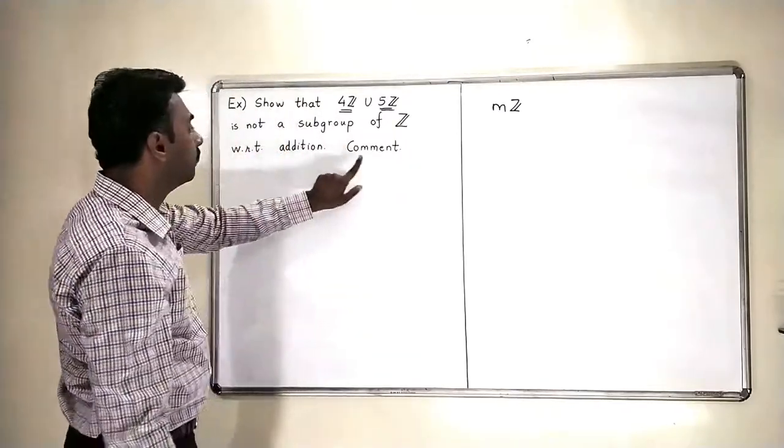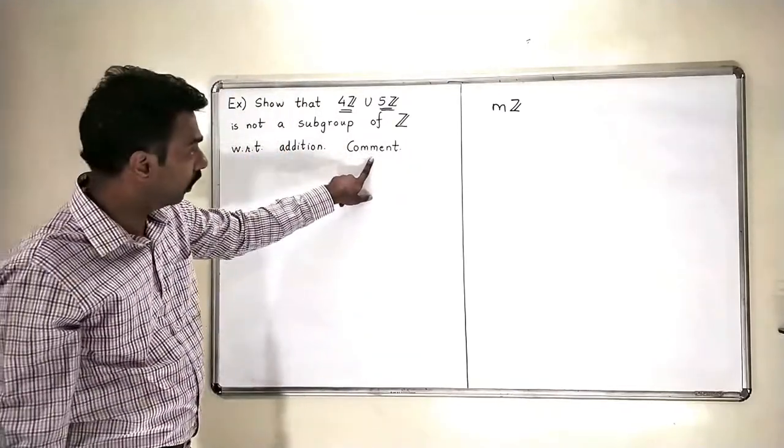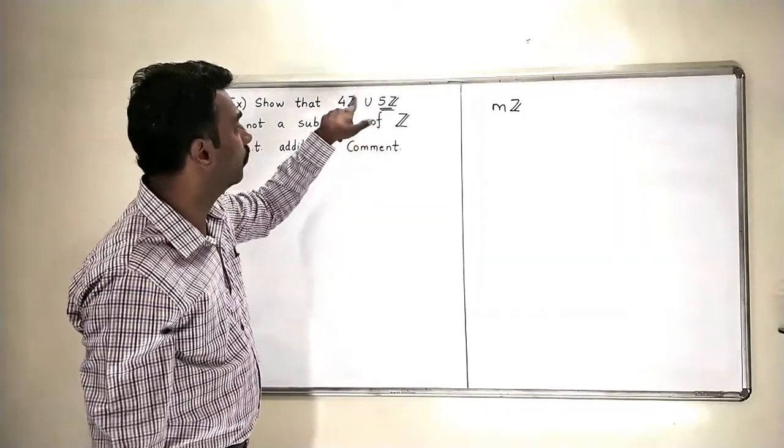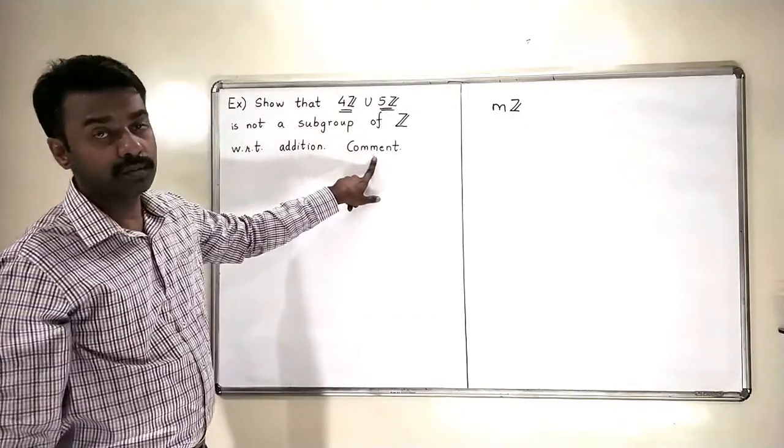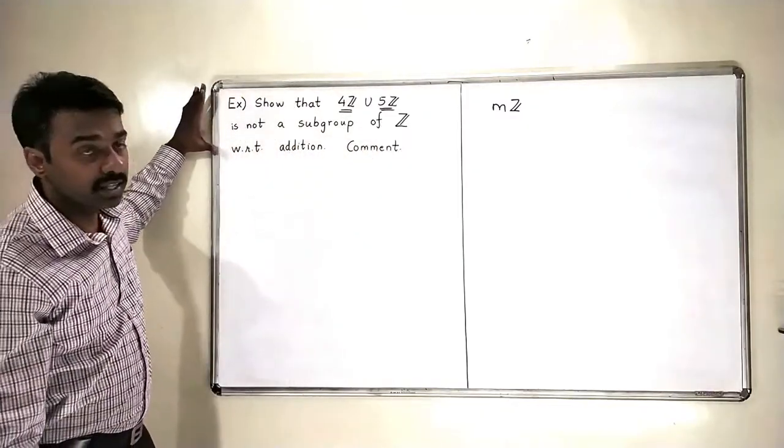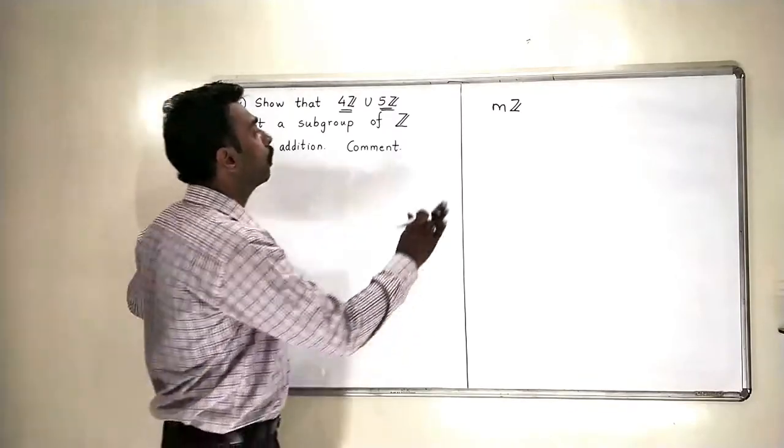So what will be the comment after I solve this exercise? We will comment that union of subgroups need not be a subgroup. So this is the main conclusion that we want to draw from this exercise.